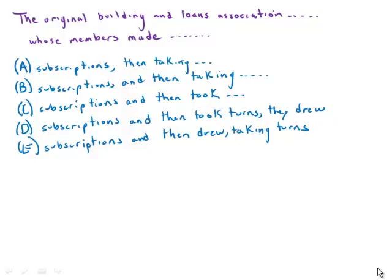In this one, the members make two actions in sequence. First, they make monthly payments, then they take turns drawing on the funds.